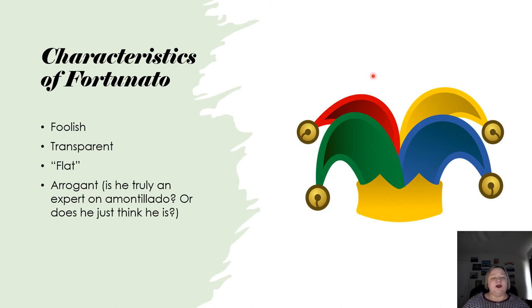Okay, and finally, the characteristics of Fortunato. He is foolish. We know that. That's what a jester hat looks like. And the jingling of the bells is mentioned several times in the story. Sometimes in a humorous capacity, another time in an ironic and sad capacity at the end as he's jingling the bells while Montresor is shouting at him and echoing his screams through the wall. He's transparent. We can see his foolishness immediately. We know who he is. We know that he thinks best of himself.